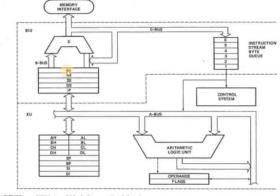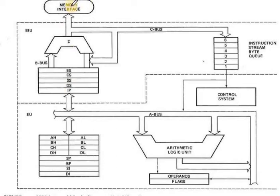This is what we call the Extra Segment register. We have the Extra Segment register, Code Segment register, Stack Segment register, Data Segment register, and Instruction Pointer. This is what we call the physical address calculator. The physical address is calculated as segment address multiplied by 10 plus offset address. These are the instructions in memory, stored in the instruction stream byte queue, which is a 6-byte queue.